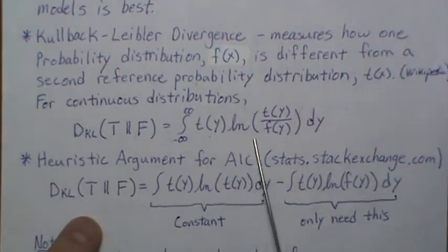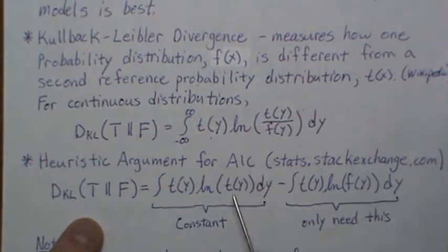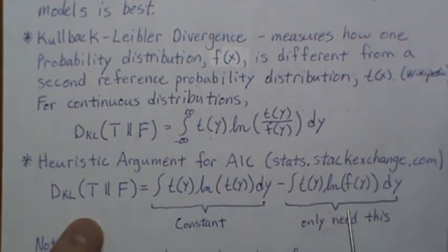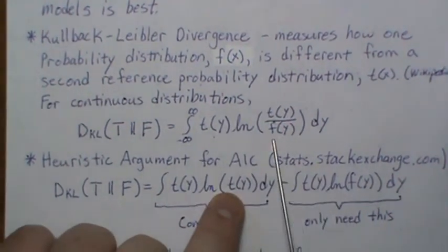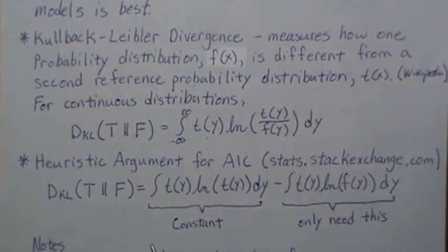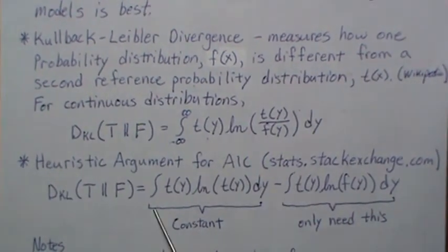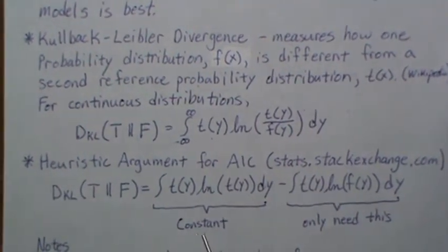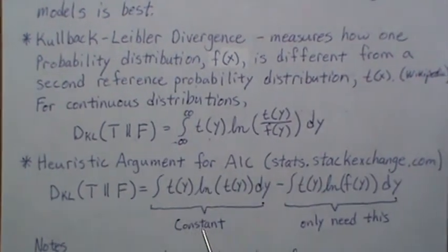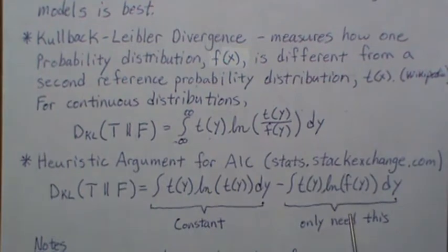We can rewrite this because the log of this ratio is the log of the difference between those two. We just broke up this log into two. If we think about this, the true model is the true model—it's not going to change—so this piece of the Kullback-Leibler divergence is constant.